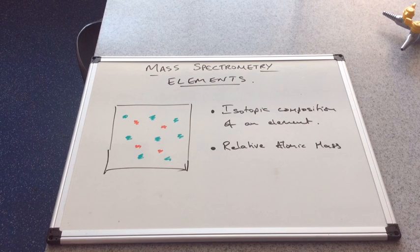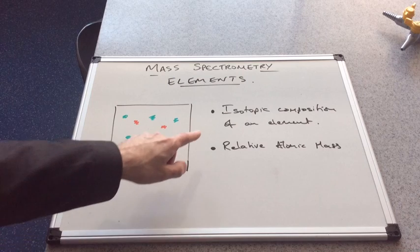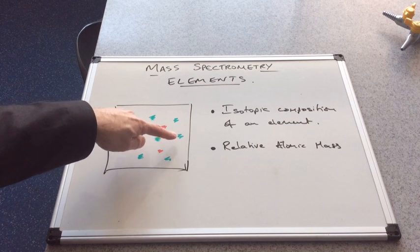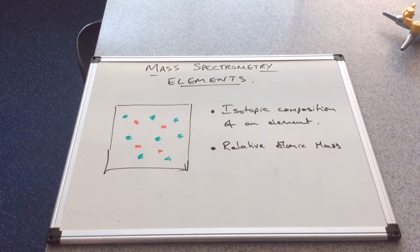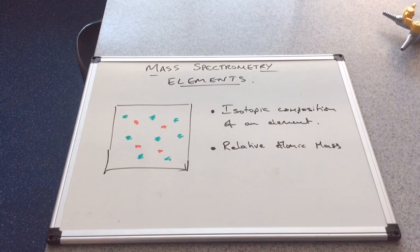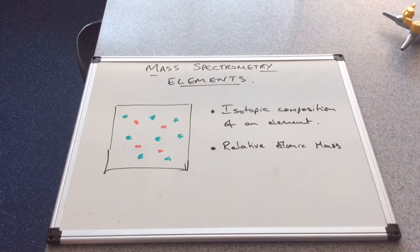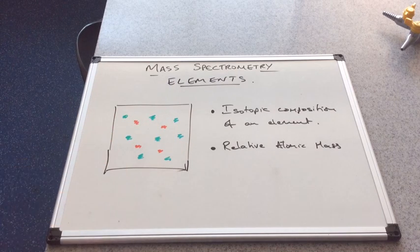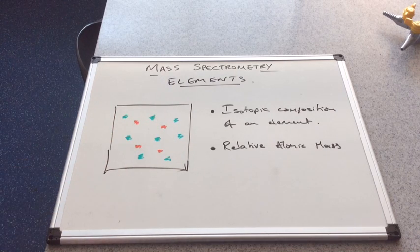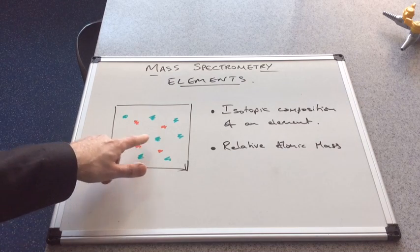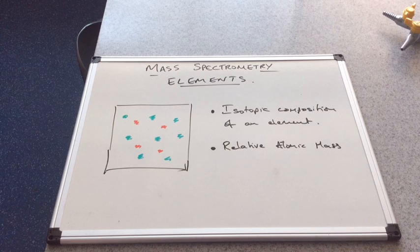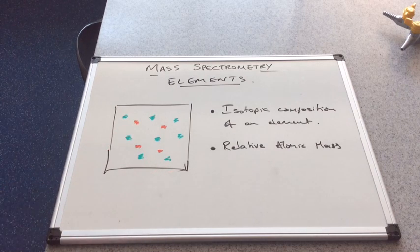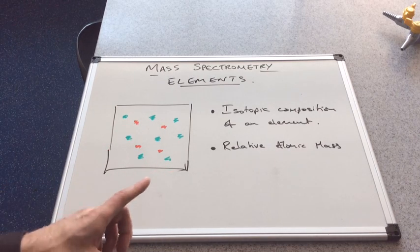Mass spectrometry can tell us a couple of things about this element. It can tell us the isotopic composition of the element—how much of these isotopes are green and how much are red. It can also tell us the relative atomic mass, which is the combined mass of the isotopes taking into account the weighted mean. There are more green isotopes than red, so the relative atomic mass would be slightly closer to the green mass.